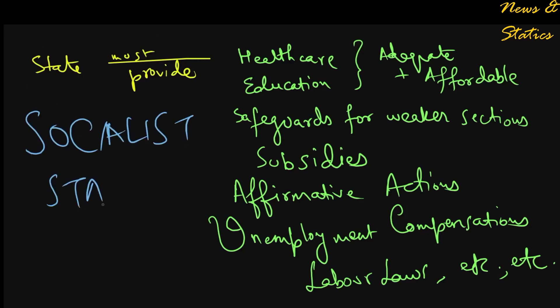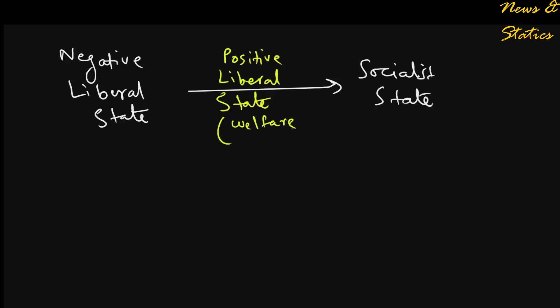Well, are you imagining a socialist state? You're right. This is a direct transition from a negative liberal to a socialist state. Today there is hardly any state in the world which is purely negative liberal. Positive liberalism is practiced to varying degrees in different parts of the world.